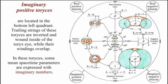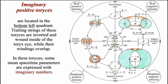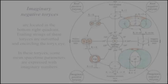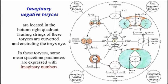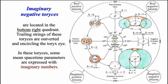Imaginary negative and imaginary positive Toreases have their trailing strings inverted and wound inside of the Torek's eye, while their windings overlap. In these Toreases, some mean spacetime parameters are expressed with imaginary numbers.